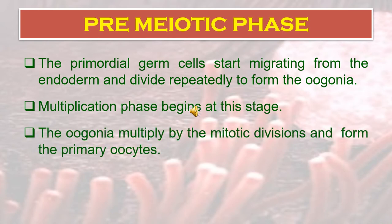In the pre-meiotic phase, the primordial germ cells start migrating from the endoderm and divide repeatedly to form the oogonia. The multiplication phase begins at this stage. The oogonia multiply by mitotic divisions and form the primary oocyte.